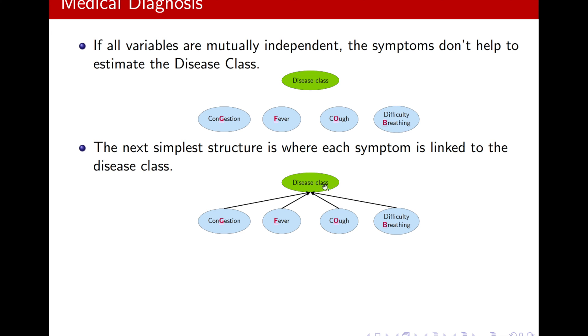Because, just, if you recall, if I want to calculate how many parameters I need for the CPD here, this disease class has three variables. So, three minus one, which is two, times, these are binary, two, two, two, two.